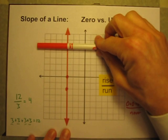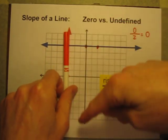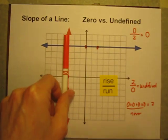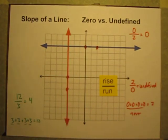So the horizontal line has no rise, but it has a run, so the slope is 0. The vertical line has a rise, but there's no run. So you're dividing by 0, which is something that is not allowed, so that is going to be an undefined slope.